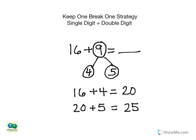In this video, you learned how to add a single digit number to a double digit number by using the keep one, break one strategy. We can decompose one number into two smaller numbers by using combinations we know and landmark or friendly numbers.